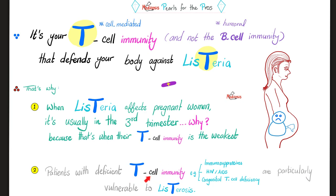Who has deficient T-cell immunity? Patients taking immunosuppressives such as steroids, cyclosporine, natalizumab, adalimumab, infliximab, etanercept, etc. Also patients with acquired immunodeficiency syndrome — because it affects T-lymphocytes — or congenital T-cell deficiency.